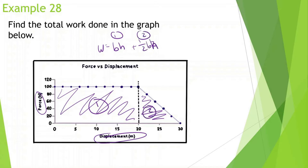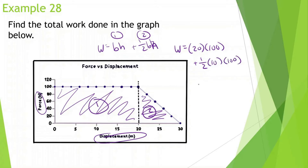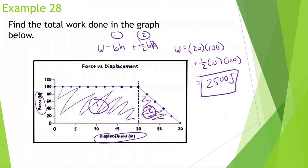Work is equal to base times height of the first section, which is 20 times 100, plus one-half base times height of the second section — one-half times base 10, times height 100. So we have 2,000 plus 500, and we should get around 2,500 joules. The area under the curve for a force-versus-position graph gives us the work done.